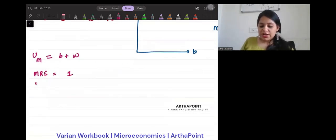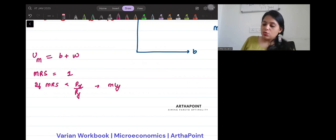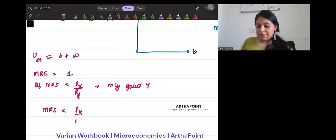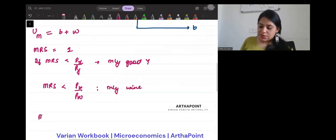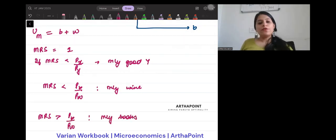Now we know the condition that if MRS is less than PX by PY, you consume only good wine. In this case, if MRS is less than PB by PW, I will consume only wine. If MRS is greater than PB by PW, I will consume only books.